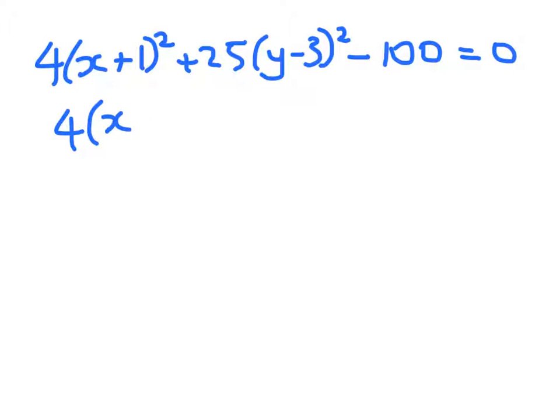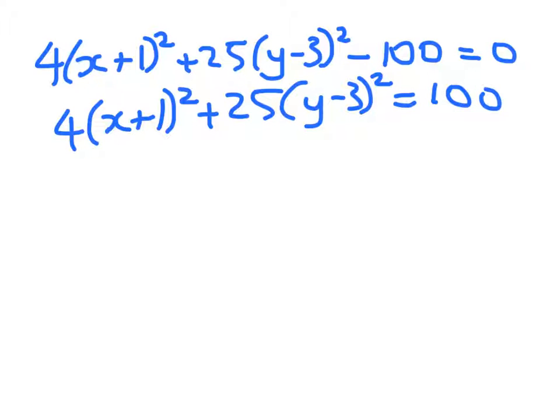So 4(x + 1)² + 25(y - 3)² = 100. Now my goal is to end up with this number being 1. So I'll divide both sides through by 100, and I'll do that now.